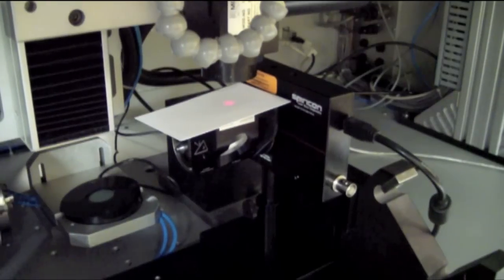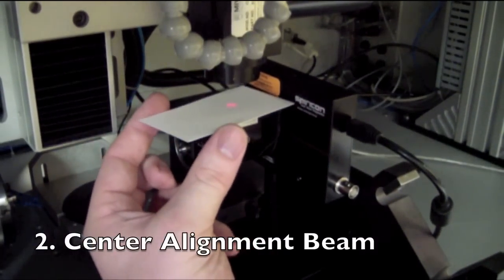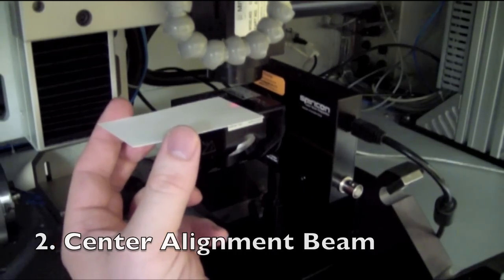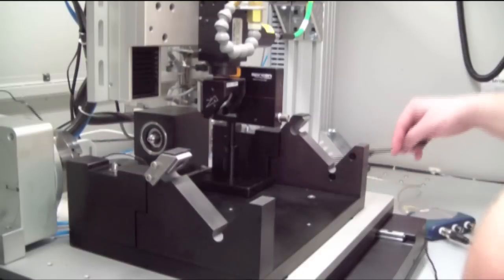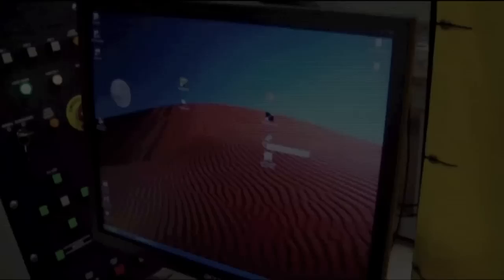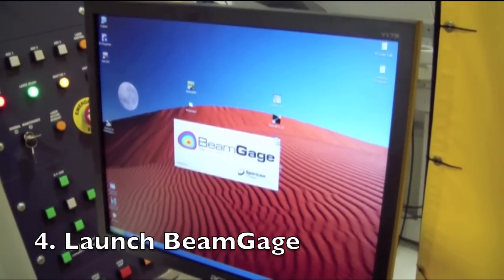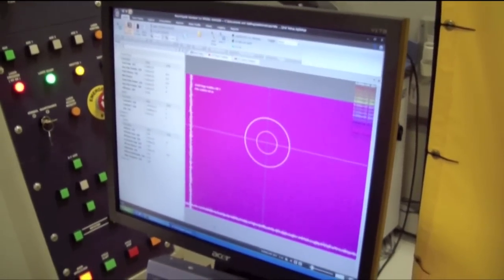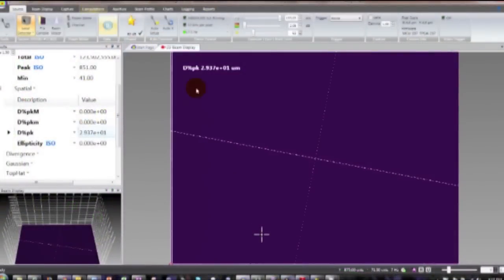With only the alignment laser on, using a white card or piece of paper, do your best to center the beam onto the input aperture of the LBS 300. Ensure that your camera is interfaced with your PC via the USB cable. Now launch the beam gauge beam analysis software. Ensure that you have a connection with the camera and that you are viewing a live image from the camera.